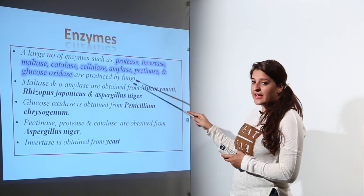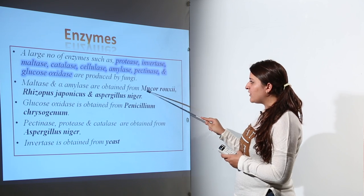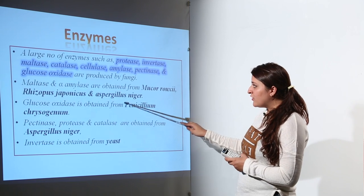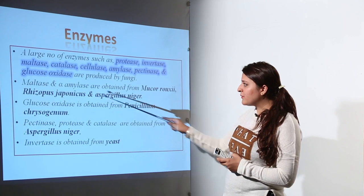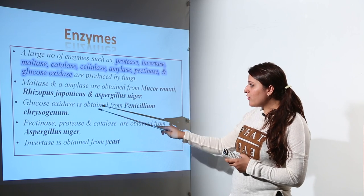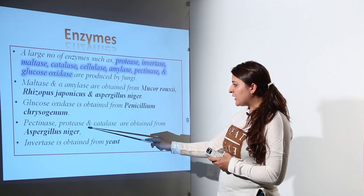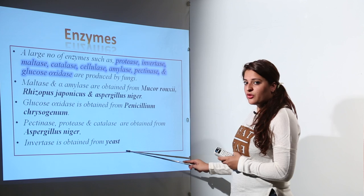Maltase and amylase are obtained from Mucor, Rhizopus, and Aspergillus. Glucose oxidase is obtained from Penicillium. Pectinase, protease, and catalase are obtained from Aspergillus, and invertase from yeast.